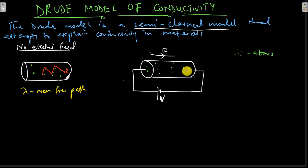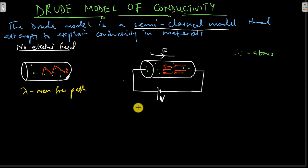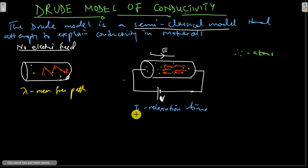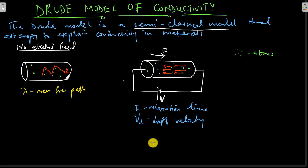We have charge carriers shown in red — they'll move in the direction of the field. But because there are stationary atoms in this material, these charge carriers will still have a difficult time as they collide with some of these stationary atoms. The average time taken from one collision to another is called the relaxation time, tau. As the electrons move, they will be moving with a certain velocity — we'll call that Vd, the drift velocity.